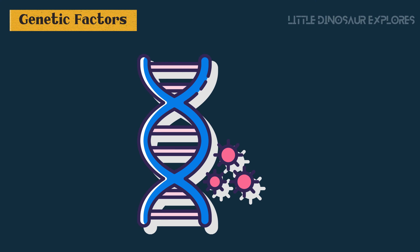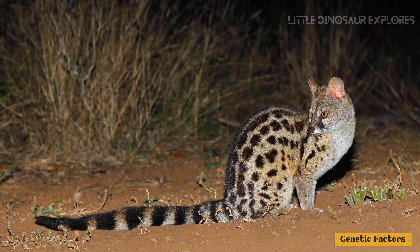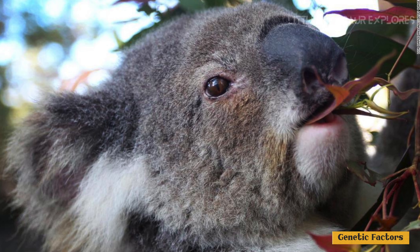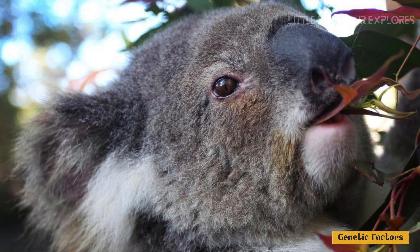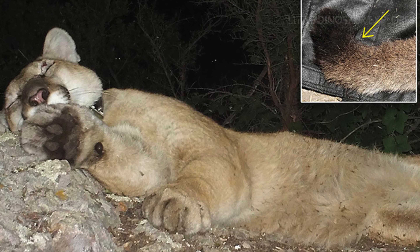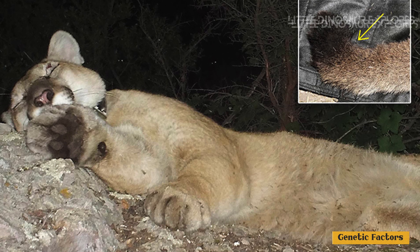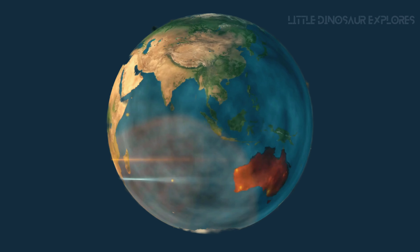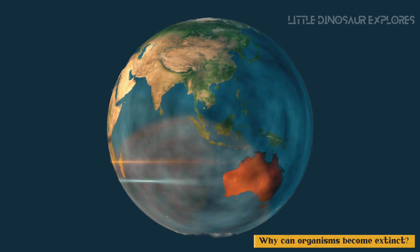8. Genetic factors. Small population sizes, inbreeding, and loss of genetic diversity can increase the vulnerability of species to extinction. Reduced genetic diversity can limit the ability of populations to adapt to changing environmental conditions, making them more susceptible to extinction due to factors such as disease, habitat loss, or climate change.